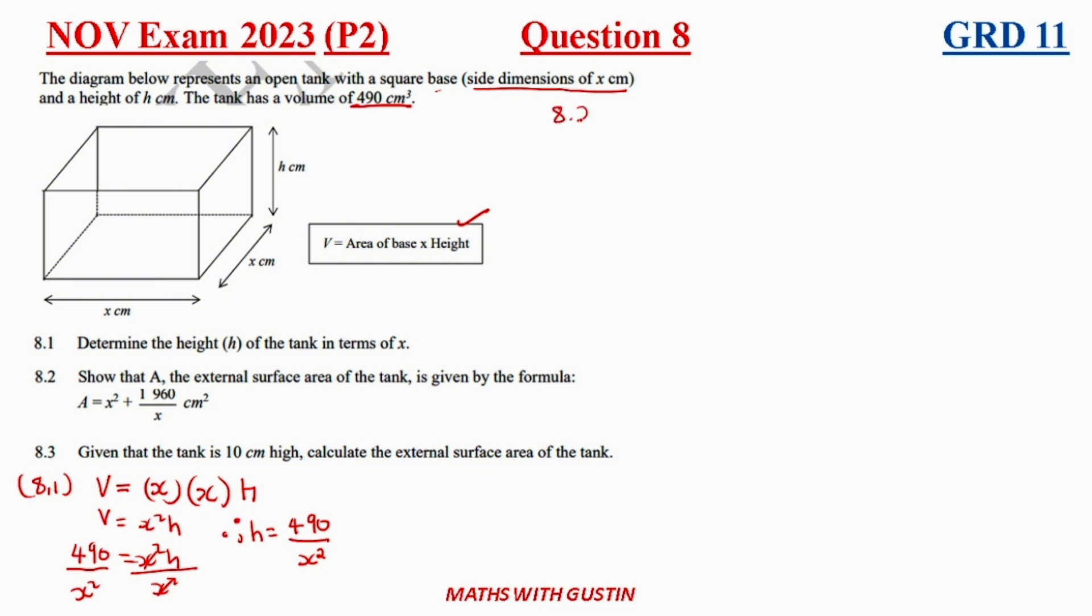8.2 says here show that area, the external surface of the tank, can be given by that. By A, it's equal to x squared plus 1960 all over x squared in centimeter squared.